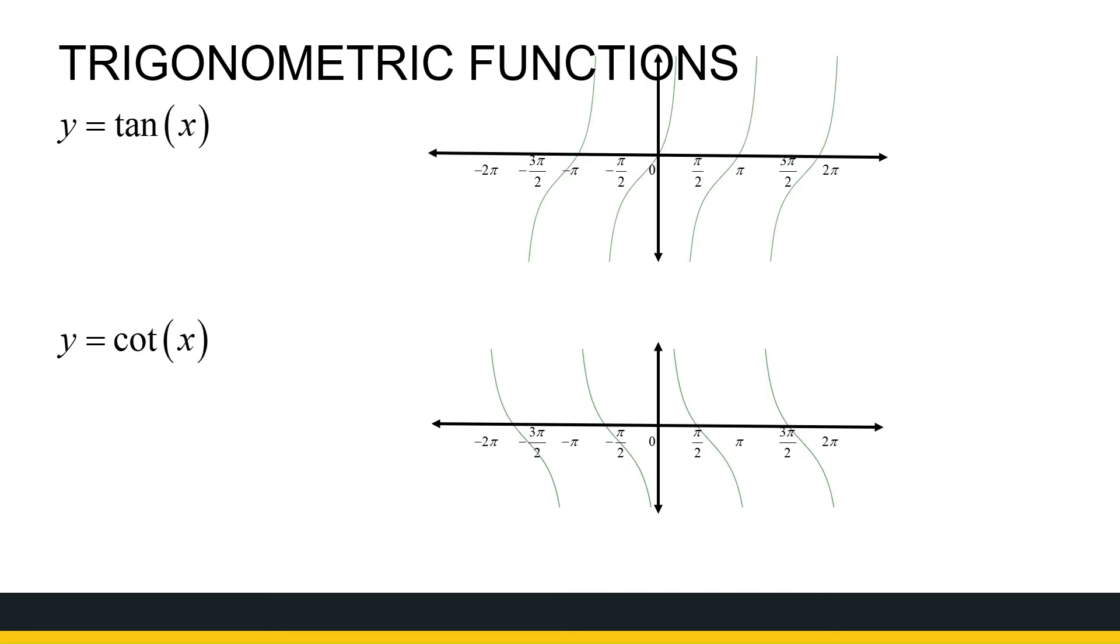So the last two we're looking at is tan and cot. Now tan and cot keep carrying on—they have some asymptotes. Tan is not defined at minus pi over 2, at pi over 2, at 3 pi over 2, minus 3 pi over 2. Tan is not defined at those places.